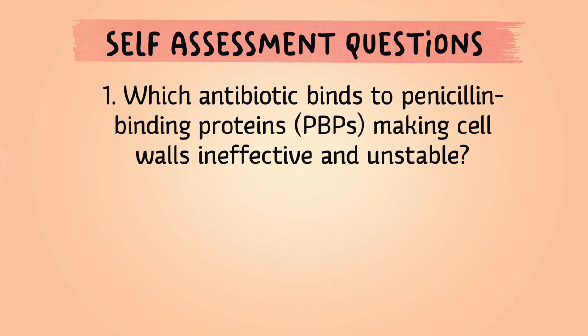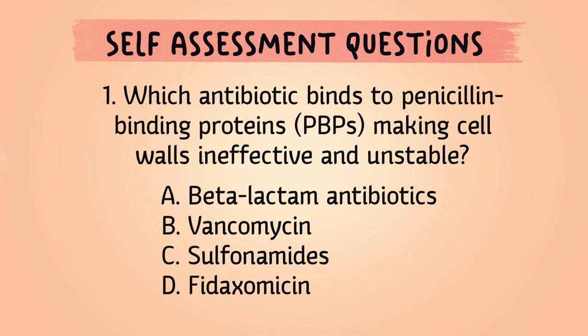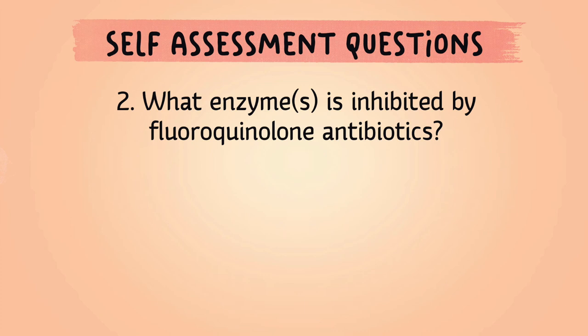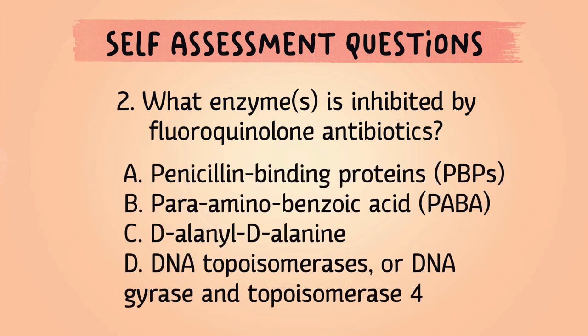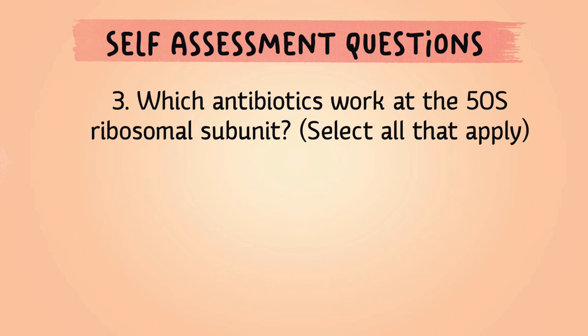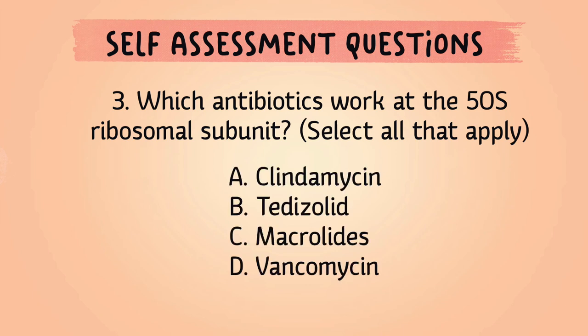Which antibiotic binds to penicillin-binding proteins making cell walls ineffective and unstable? A, beta-lactam antibiotics. B, vancomycin. C, sulfonamides. Or D, fidaxomycin. The answer is A, beta-lactam antibiotics. Which enzyme is inhibited by fluoroquinolone antibiotics? The answer is D, DNA topoisomerases — or DNA gyrase and topoisomerase IV. Which antibiotics work at the 50S ribosomal subunit? Select all that apply. The answer is A, B, and C. Remember, you want to come to 50S Street. Tedizolid belongs to the oxazolidinone class.